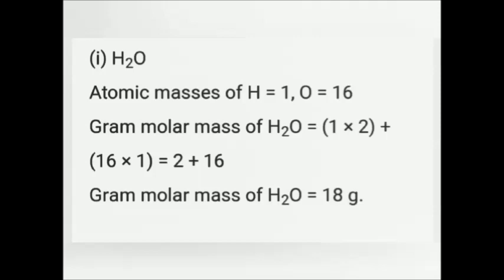Calculate gram molar mass of water. The formula for water is H₂O — 2 hydrogen, 1 oxygen. Atomic mass of hydrogen is 1; atomic mass of oxygen is 16. So: 2 × 1 + 1 × 16 = 2 + 16 = 18. Therefore, 18 grams is the gram molar mass of H₂O.